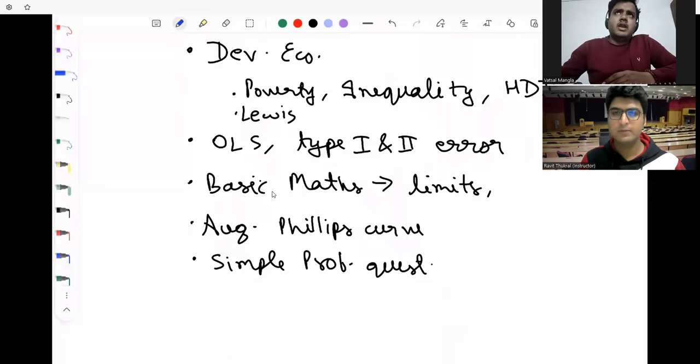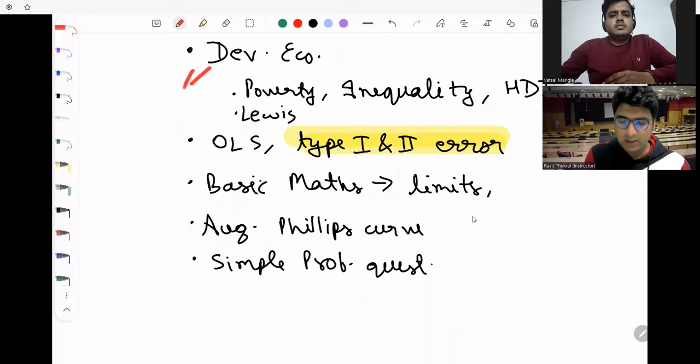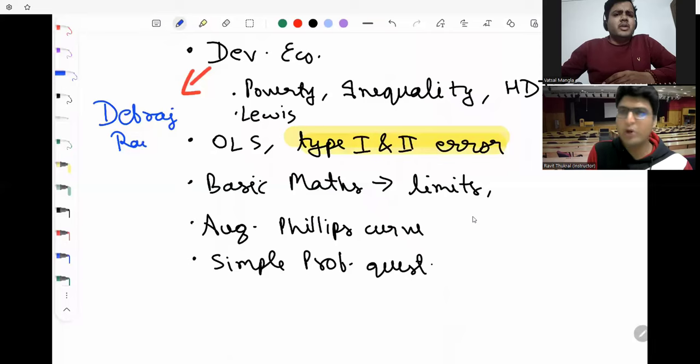For probability, 12th class probability, any book for 12th class you can refer. For econometrics, I still remember last year they had many questions, about two to three questions on Type I and Type II errors. One was a direct question, one was for matching. Type I error and Type II error is kind of important as per last year's exam. For development, I would say Debraj Ray is better. Debraj Ray will supplement almost all topics right - Gini coefficient and all the inequality, Lorenz curve.